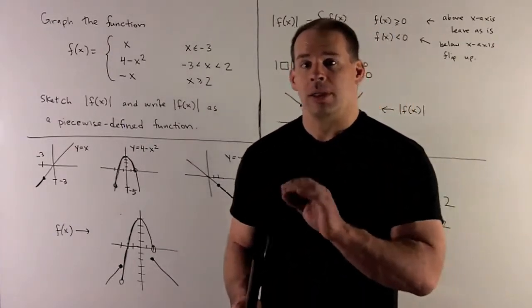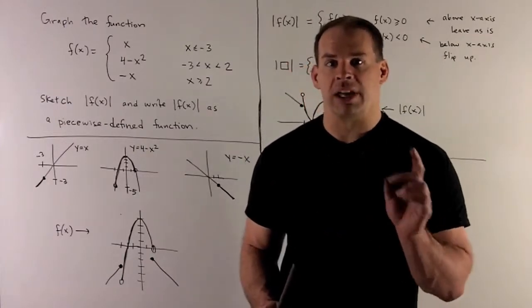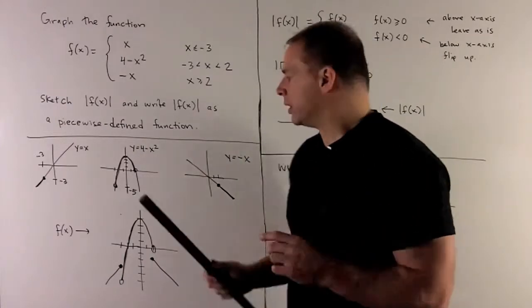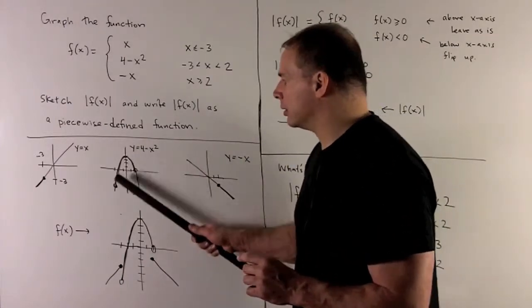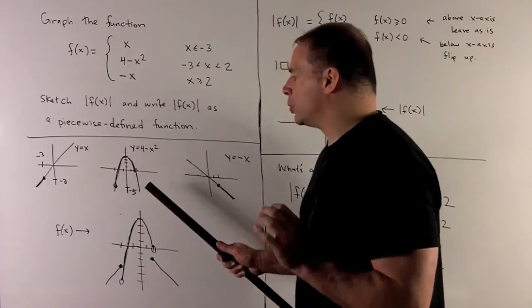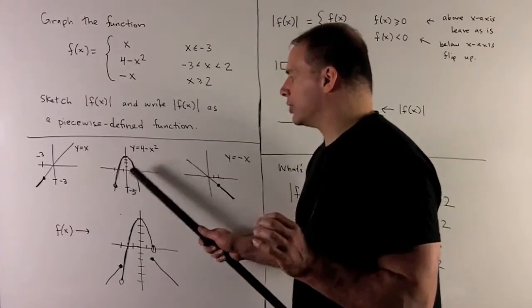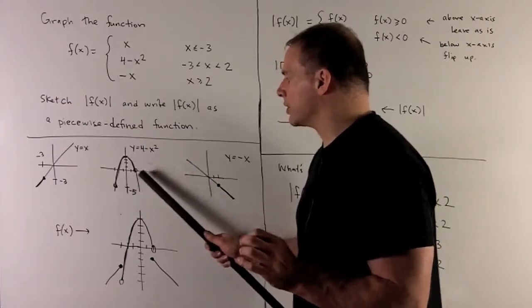We only want the part of this graph between minus 3 and 2, so we'll darken that region. Note we only want between minus 3 and 2, so we'll have open endpoints.